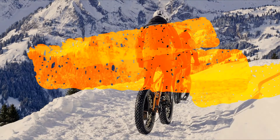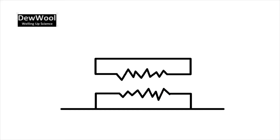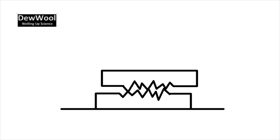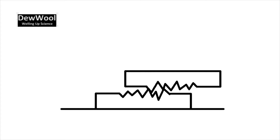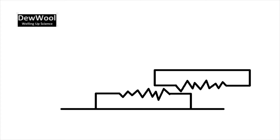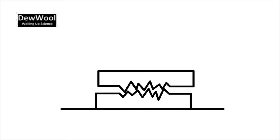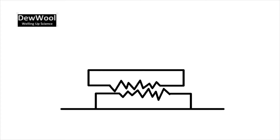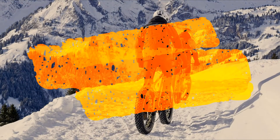Third, the frictional force depends on the type of sliding materials. Higher the roughness of the surfaces, higher will be the friction. This simulation shows the interlocking of rough surfaces at microscopic scale.